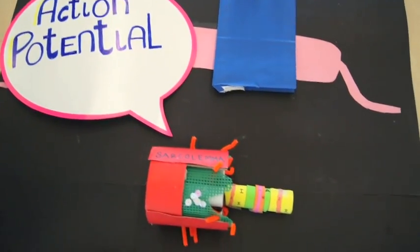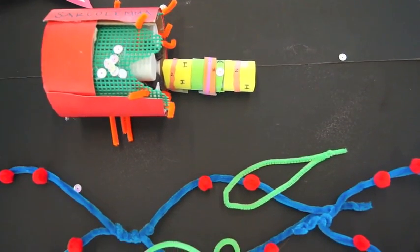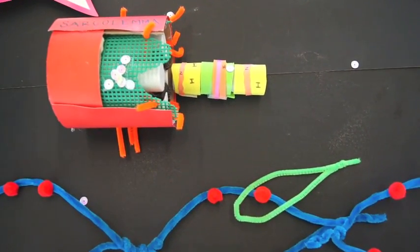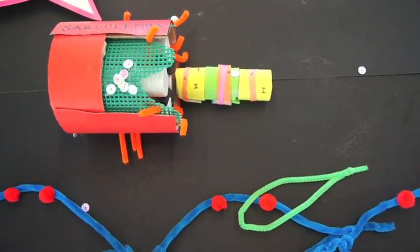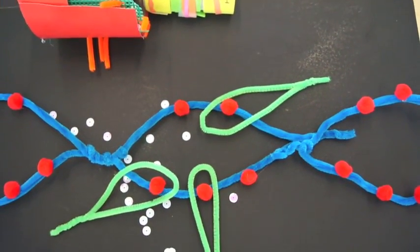Action potential travels down the T-tubules, which are orange, and triggers the release of calcium from the terminal cisternae of the sarcoplasmic reticulum, which is green. Calcium ions then bind to troponin, leaving the actin active sites exposed.